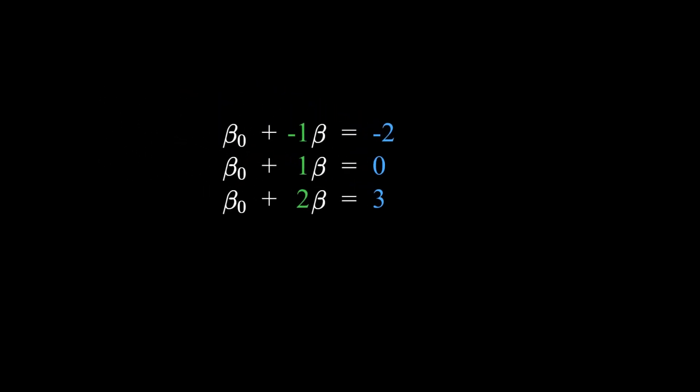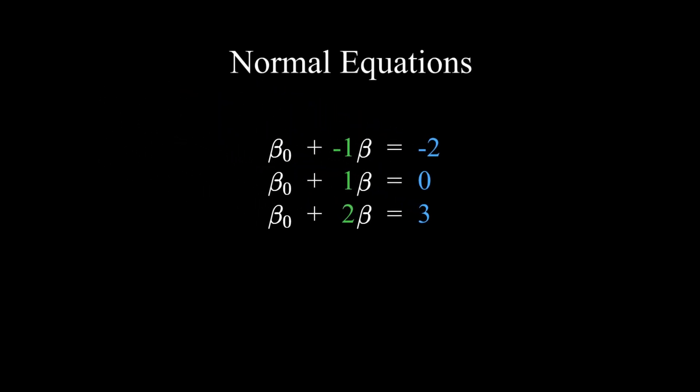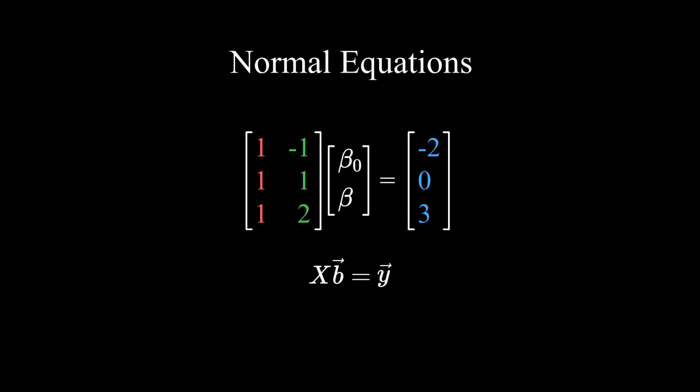And we obtain this vector by solving what's called the normal equations, which I would say is one of the most important equations in linear algebra. The idea is to reorganize the system of equations into matrix form, and then multiply each side of the equation by the transpose of the matrix.